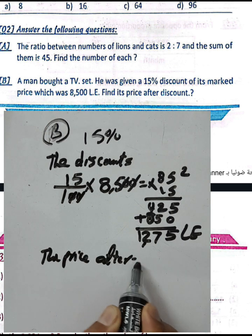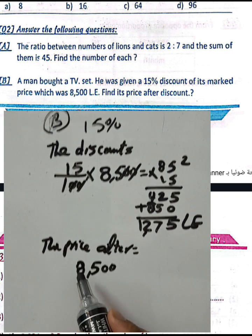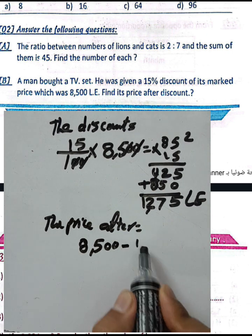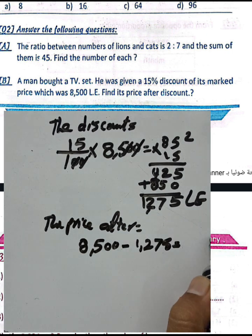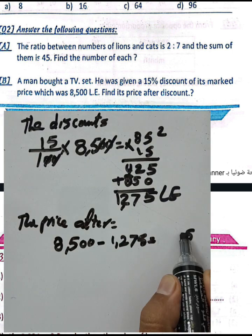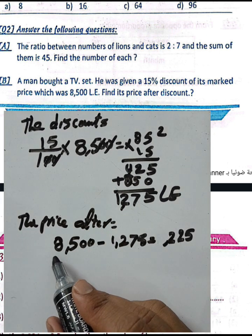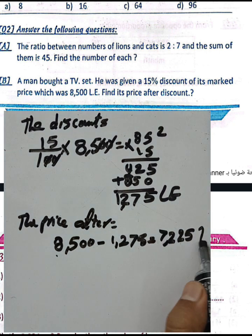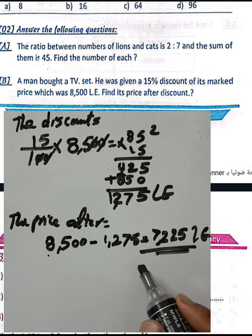The price after discount: 8500 minus 1275. Subtract: 8500 minus 1275 equals 7225. The price of the TV after discount is 7225.